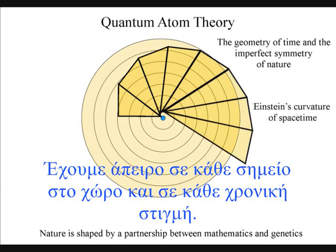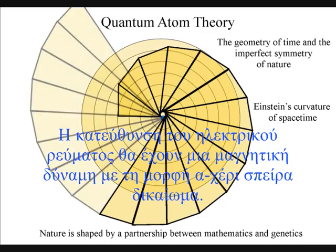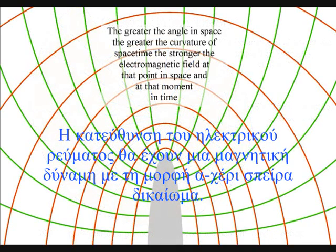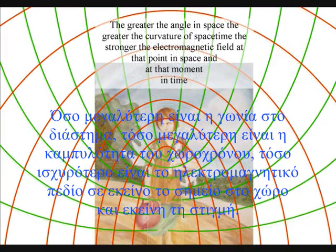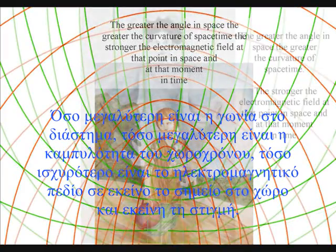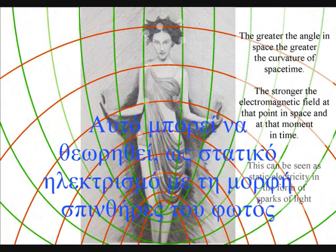The greater the angle in space, the greater the curvature of spacetime, the stronger the electromagnetic field at that point in space and at that moment in time. This can be seen as sparks of light associated with static electricity.